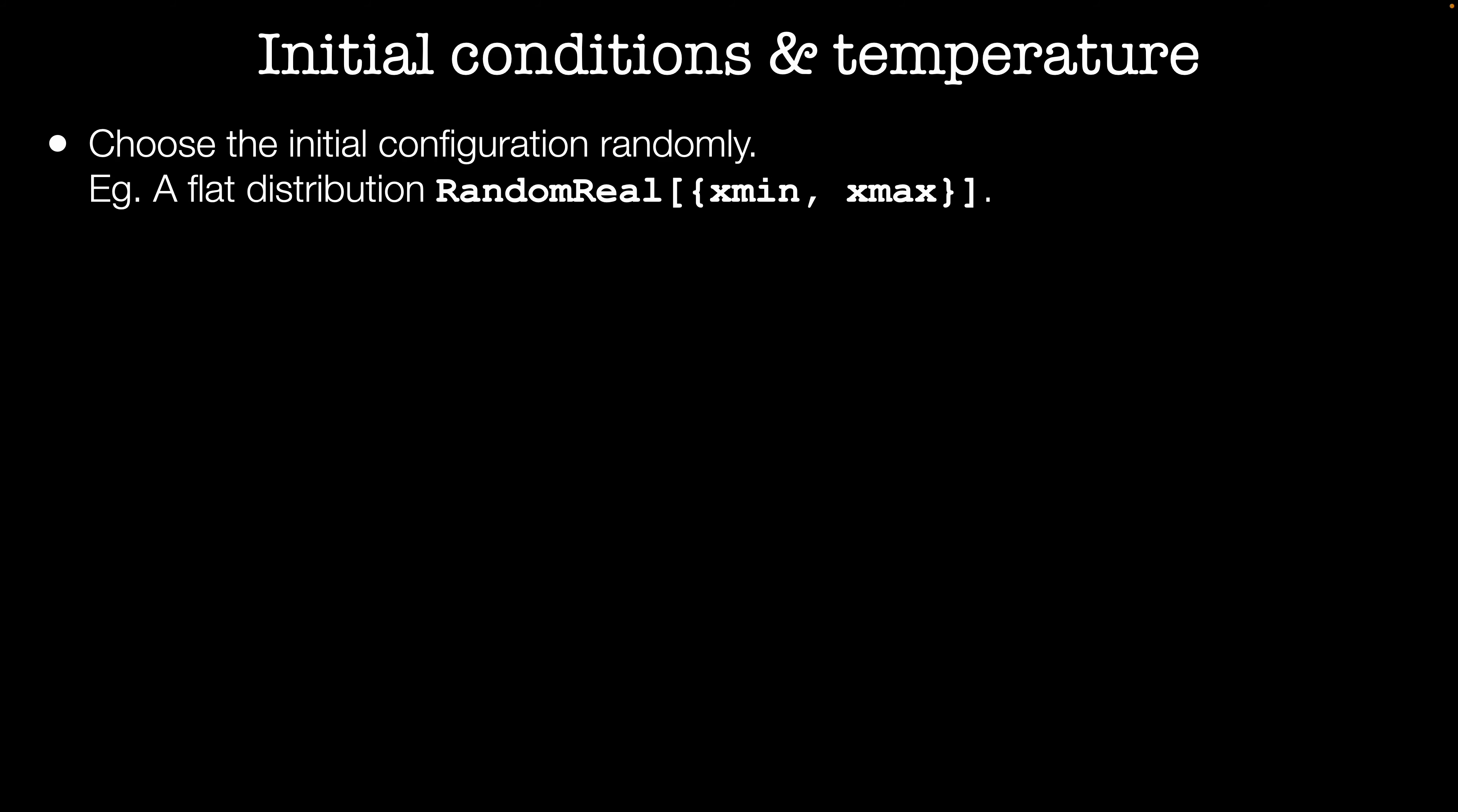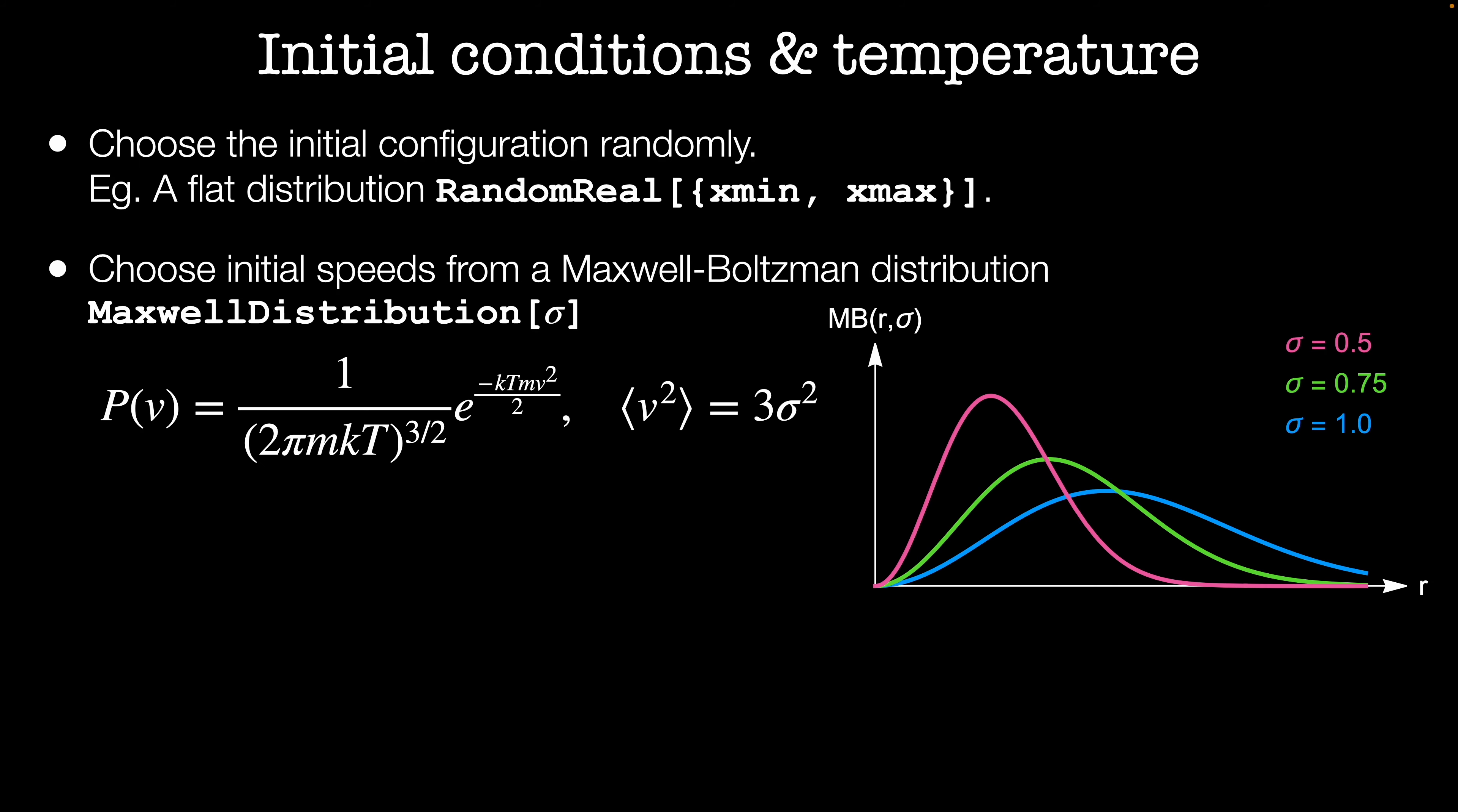Next, we'll need to choose the initial speed of our particles. Since this is a simulation of an ideal gas, we'll be drawing those from the Maxwell-Boltzmann distribution. The width of this distribution is given by sigma, and sigma is one-third of the average squared speed.